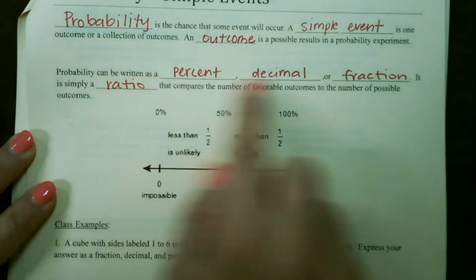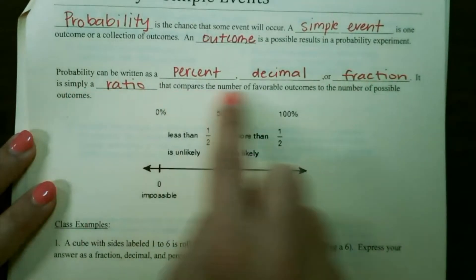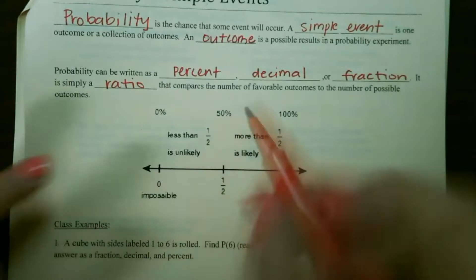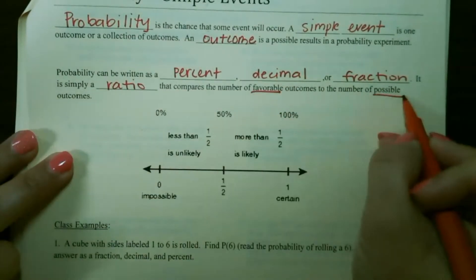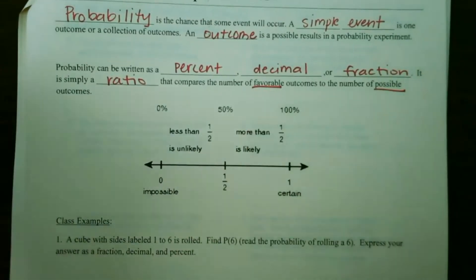Probability can be written as a percent, decimal, or fraction. It is simply a ratio that compares the number of favorable outcomes to the number of possible outcomes, where the favorable outcomes are the outcomes that we want.